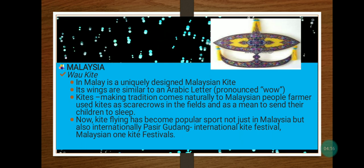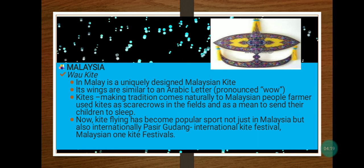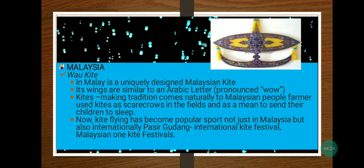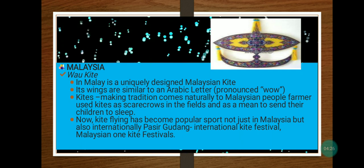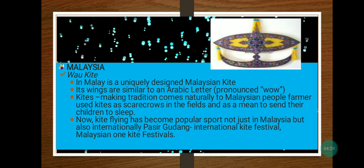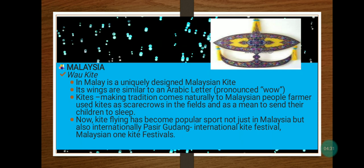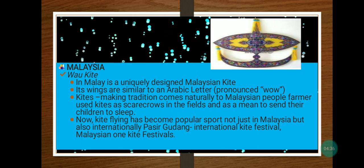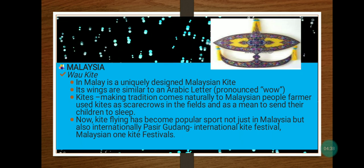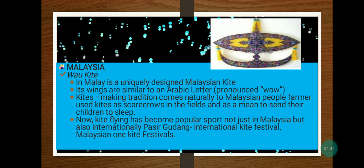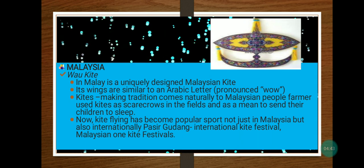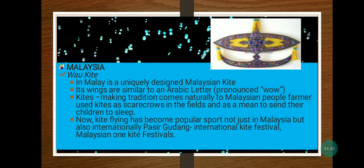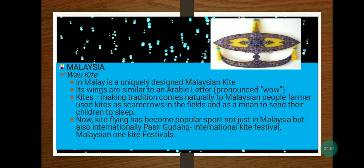In Malaysia, the wau kite is a uniquely designed Malaysian kite whose wings are similar to an Arabic letter pronounced 'wau.' Kite-making tradition comes naturally to Malaysian people — farmers used kites as scarecrows in the fields and as a means to send their children to sleep. Now kite flying has become a popular sport not just in Malaysia but also internationally, with the Pasir Gudang International Kite Festival among the well-known kite festivals.